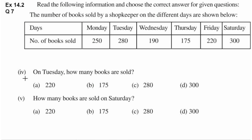Fourth question: on Tuesday how many books are sold? Tuesday kaun per mentioned hai? Yahaan per. And Tuesday ko kitni books sell hoi hai? 280. Yahaan per 280 mentioned hai C option mein, so C is the correct answer.